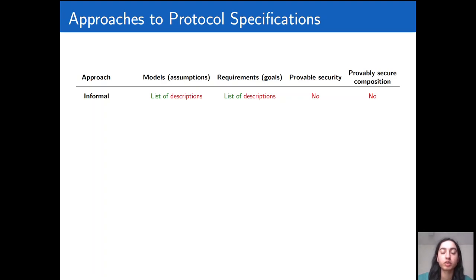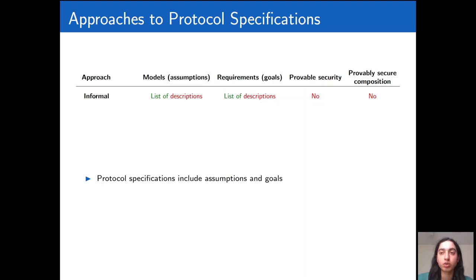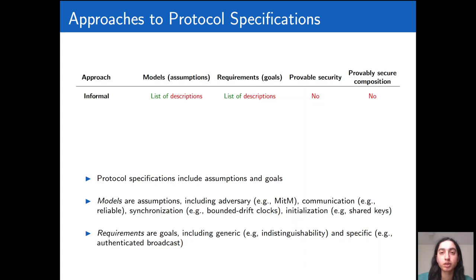In order to prove the security of protocols, we need to define what we're proving — so we need to define the protocol specifications. There are a few existing approaches to protocol specifications. The first one is the informal approach, in which we list the specifications as descriptions in words. Your specifications include the assumptions and goals, and we use models to refer to the assumptions.